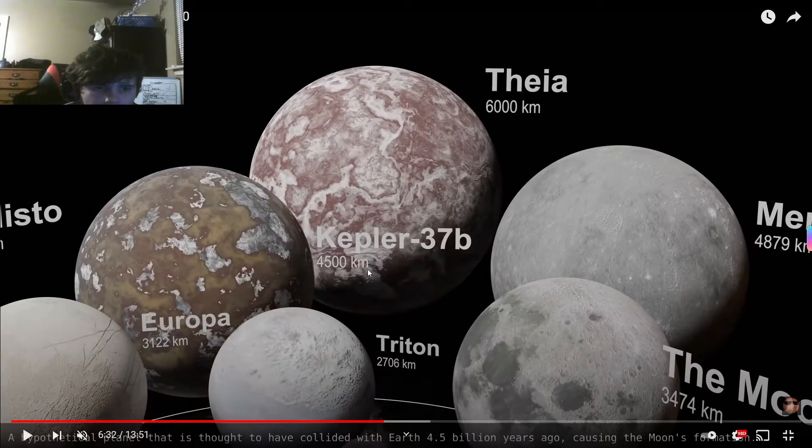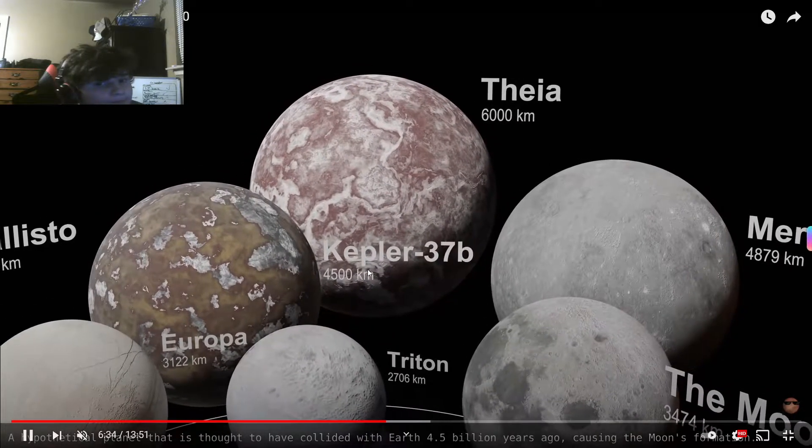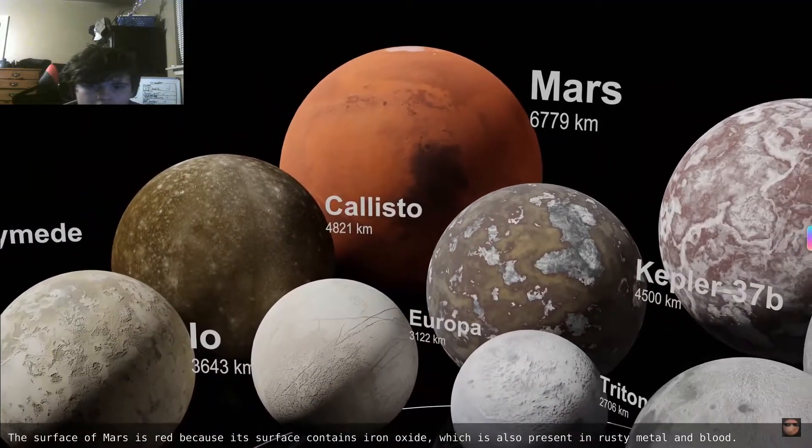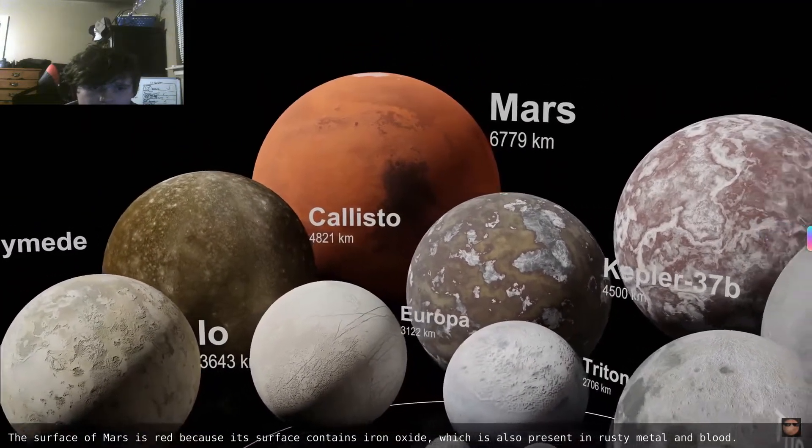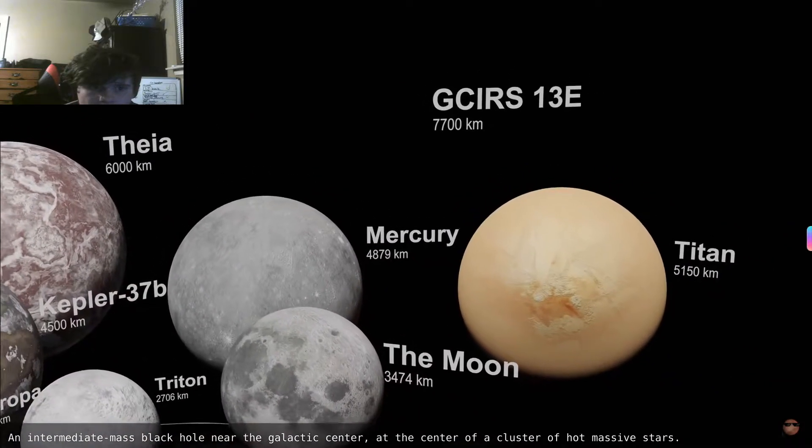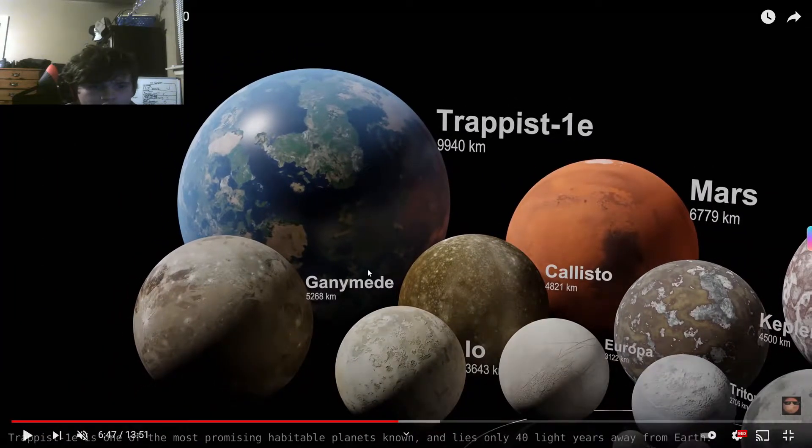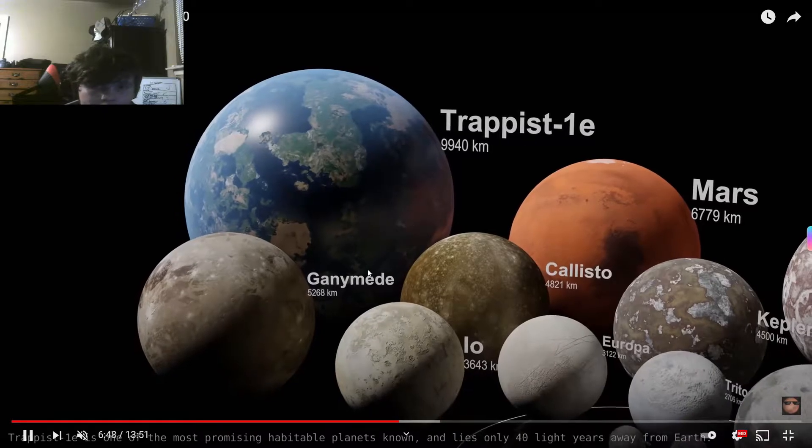A hypothetical planet that is thought to have collided with the Earth 4.5 billion years ago, causing the moon's formation. Got Mars, black hole looks like Earth. Most promising habitable planets known and lies only 40 light years away. Only.